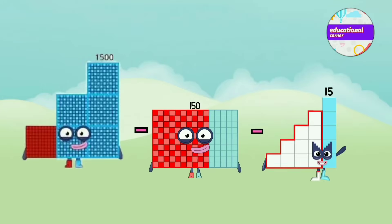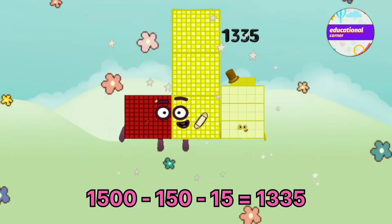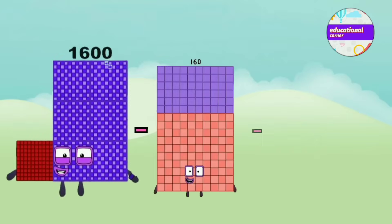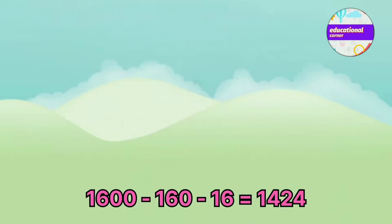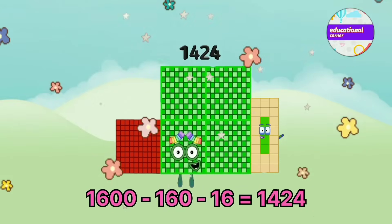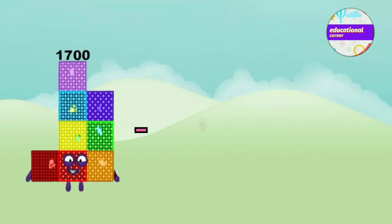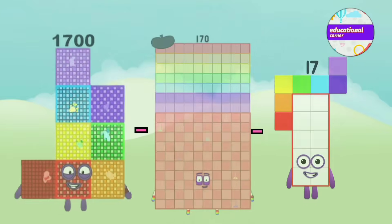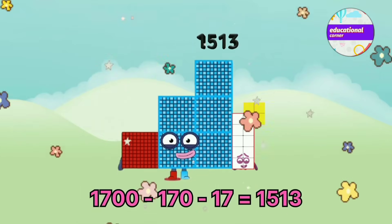1,500 minus 150 minus 15 equals 1,335. 1,600 minus 160 minus 16 equals 1,424. 1,700 minus 170 minus 17 equals 1,513.